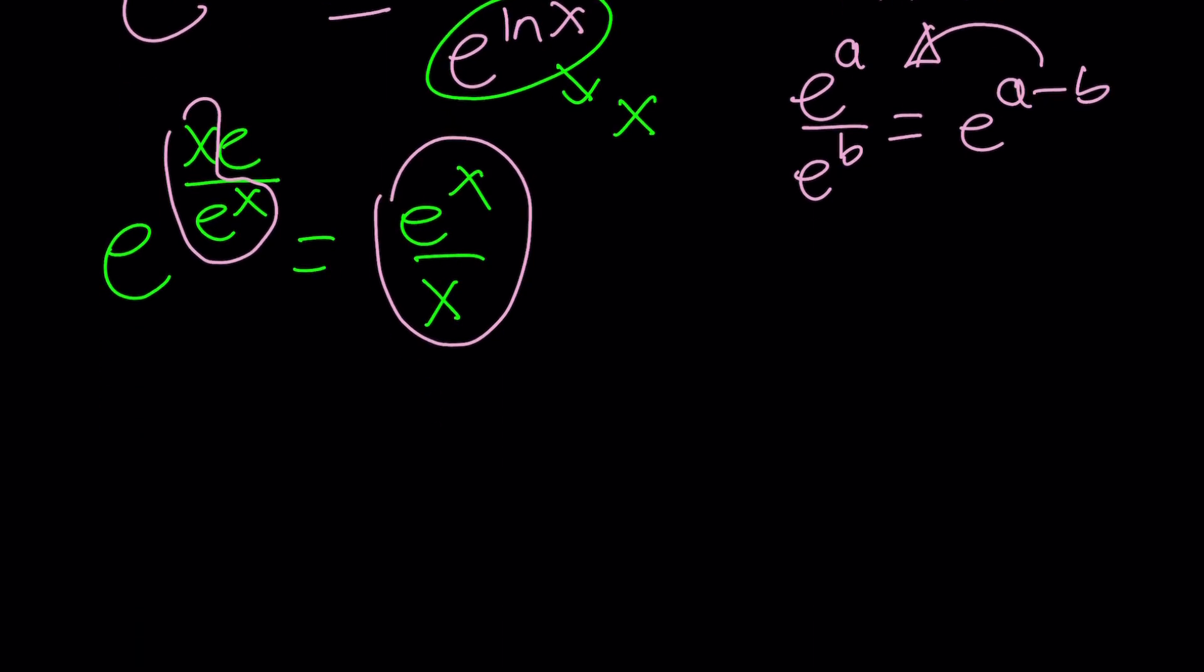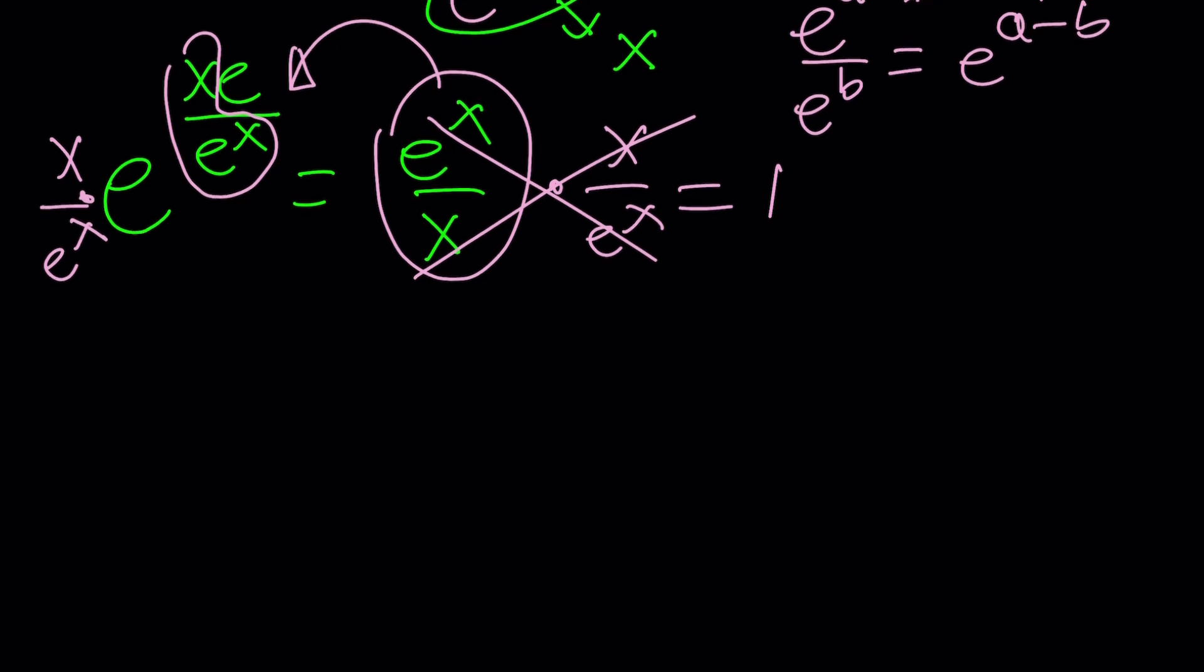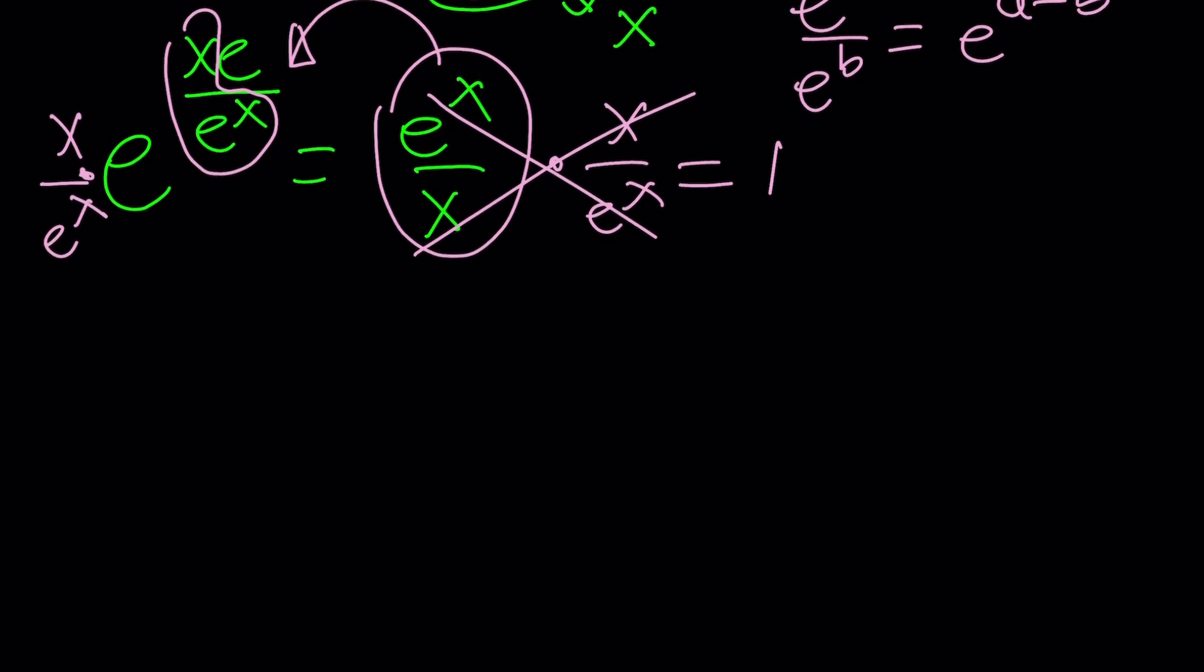So here's how it works. We're going to bring this over to the left by multiplying both sides by x over e to the x. Let's do that: x over e to the x. These are going to cancel out leaving us with one. Nice. But on the left hand side we have the following: x over e to the x times e to the e x over e to the x.